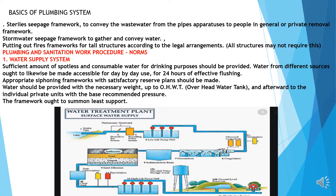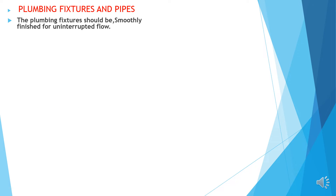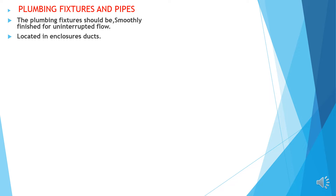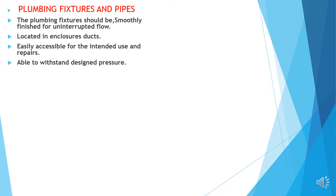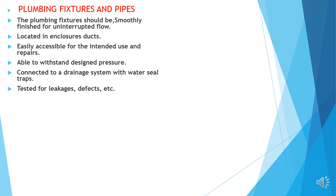This is the image of the water treatment plant if the water requires further treatment. Plumbing fixtures and pipes: the plumbing fixtures should be smoothly finished for uninterrupted flow, located in enclosure ducts, easily accessible for intended use and repairs, able to withstand design pressure, and connected to the drainage system with a water seal trap. Tested for leakages, defects, etc.